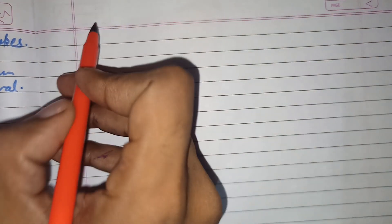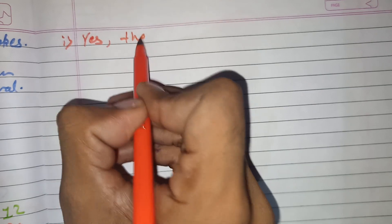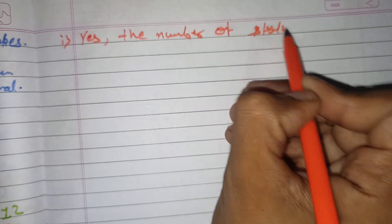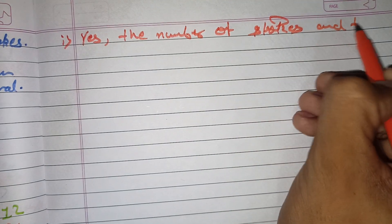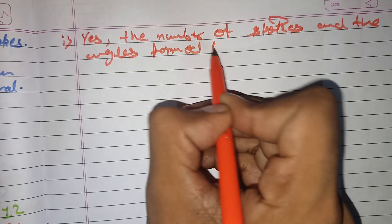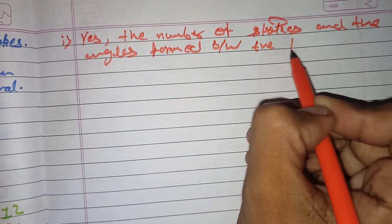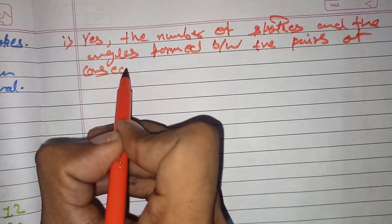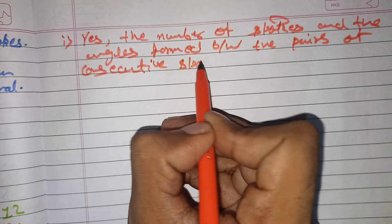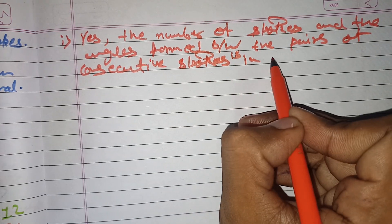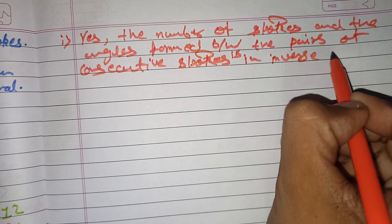So the answer to part one is: the number of spokes and the angle formed between the pair of consecutive spokes are in inverse proportion.